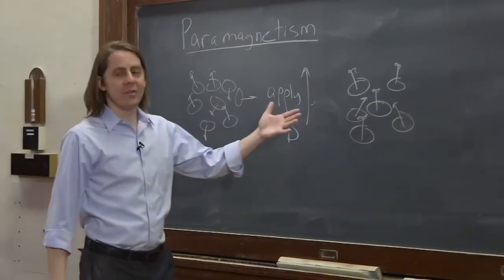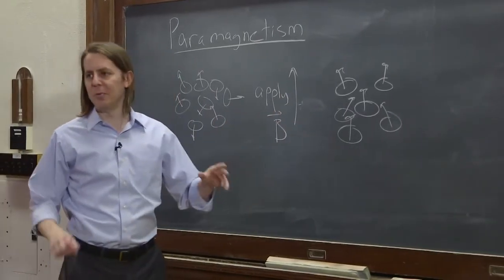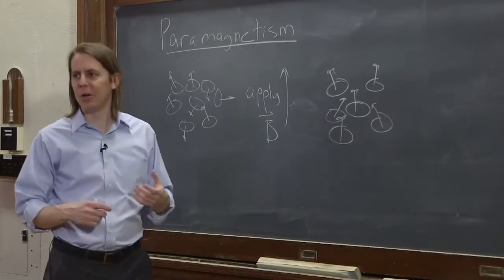So a paramagnetic material is something that does that. When you apply a magnetic field, its moments align, it becomes magnetized, it creates a magnetic field, it becomes a magnet.